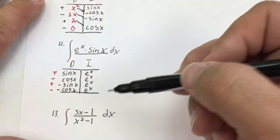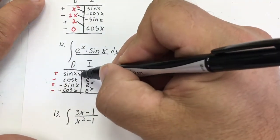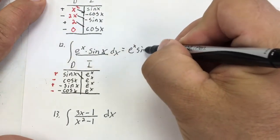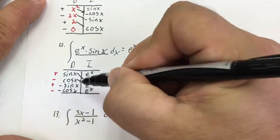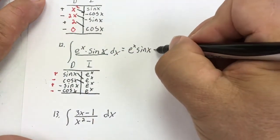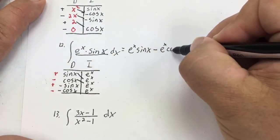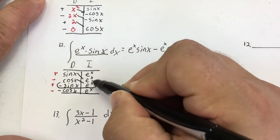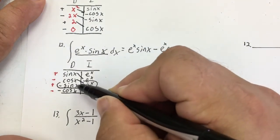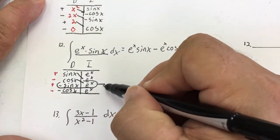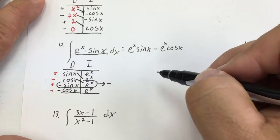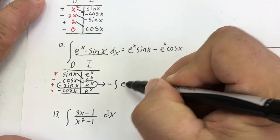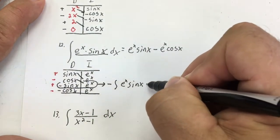I didn't need the bottom row. So I'm going to do eˣ sine x minus eˣ cosine x. Notice I get a repeat — that's going to give me negative eˣ sine x, which is a repeat. When I go in the diagonal it's an answer; when I go across it's an integral. So it's going to be negative eˣ sine x dx.